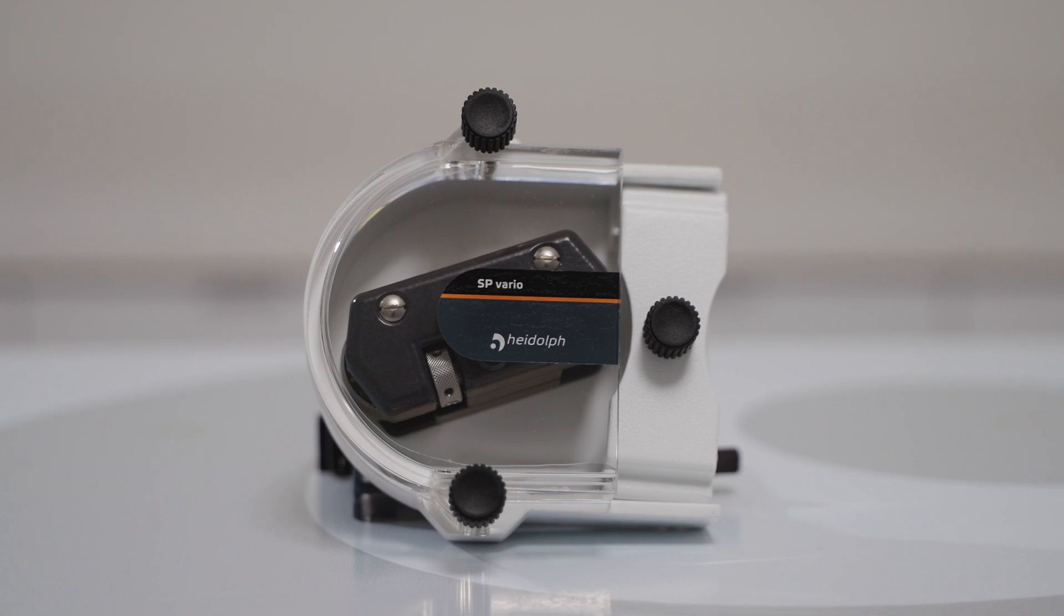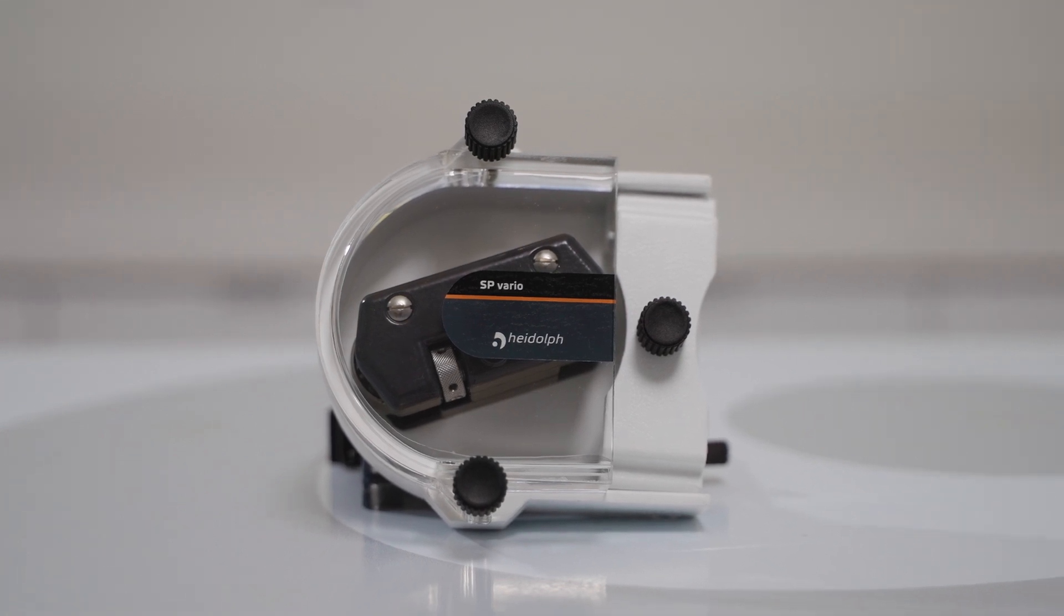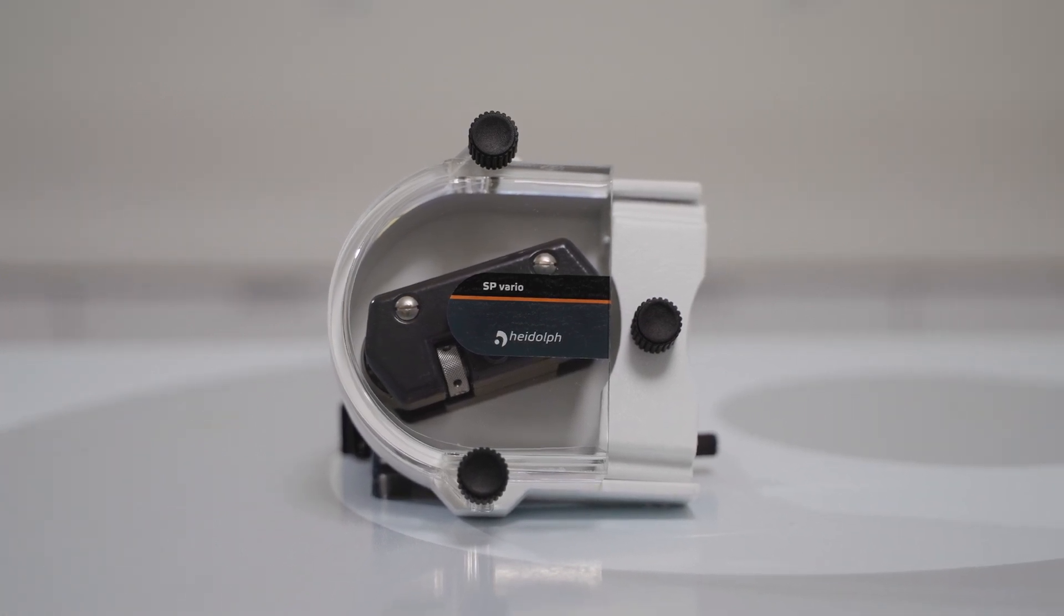If you're dealing with atypical tubing sizes, then our SP Vario is the single-channel pump head for you. The SP Vario's rollers can be adjusted to hold whatever tube securely. This allows you to dispense from practically any tube.